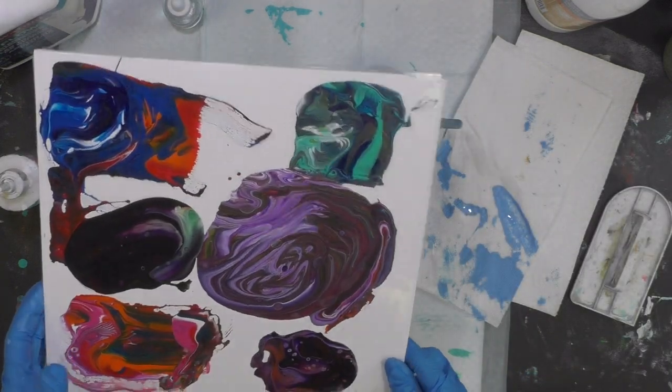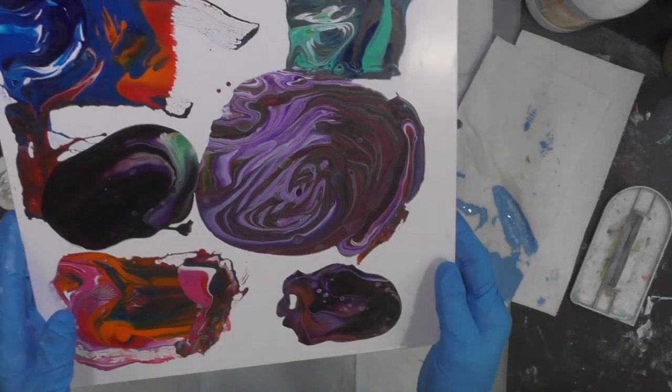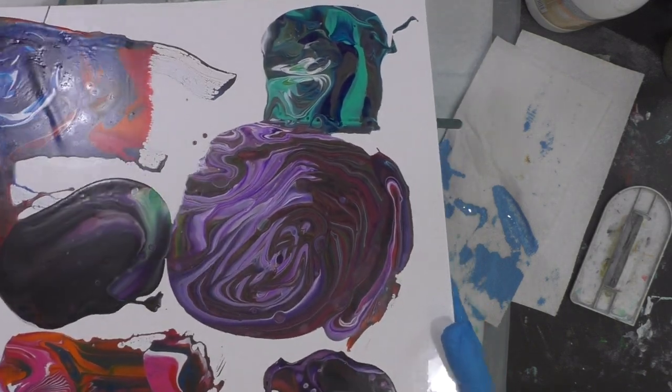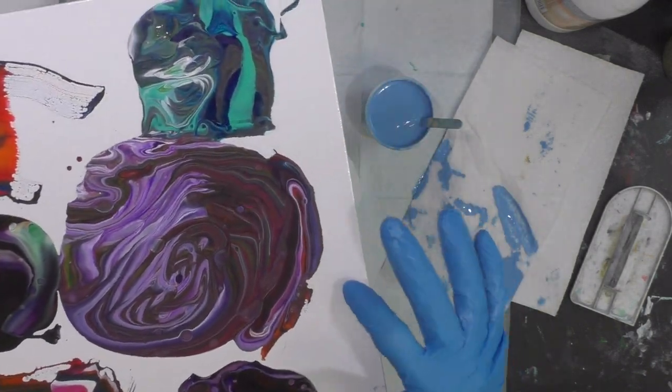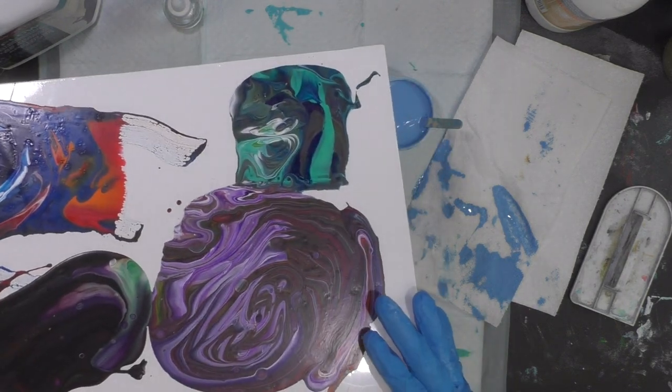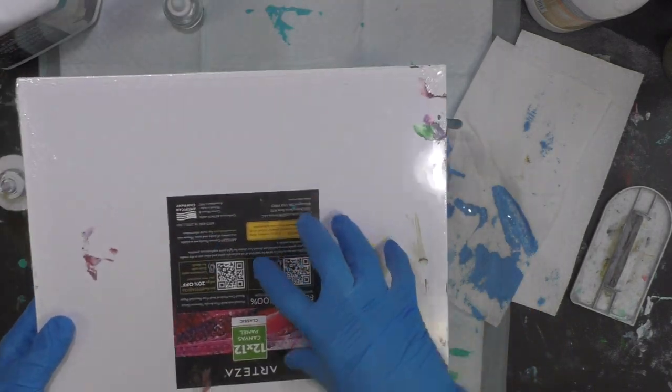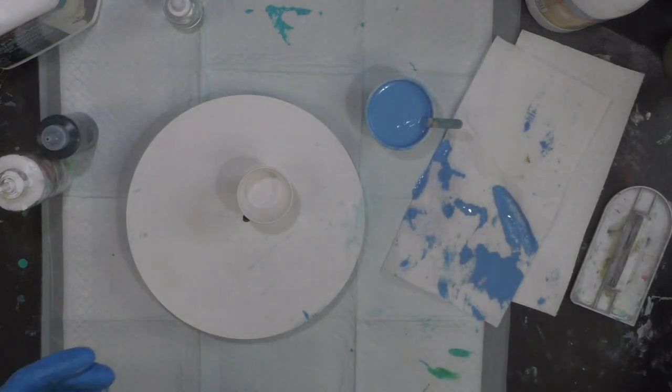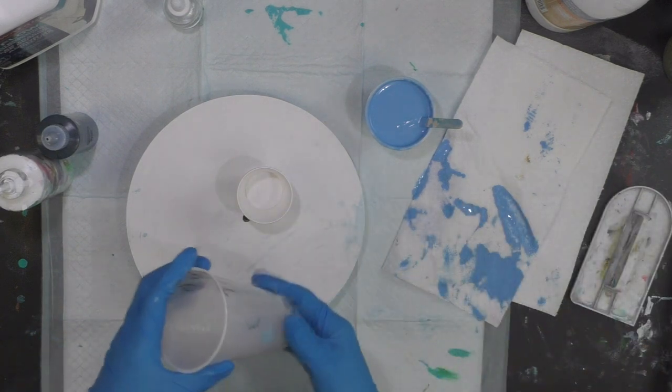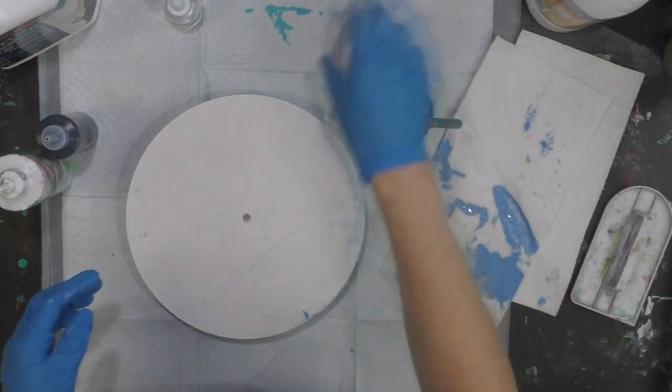This is also an Arteza 12-inch canvas panel that still has the plastic on it. That's an easy way to pour your leftovers—they dry nice and smooth and they're on plastic. You can take them off the plastic and use them for jewelry skins, acrylic skins for jewelry. I can even pour on this side as well and let that dry. I'll still do the three-ounce cup.